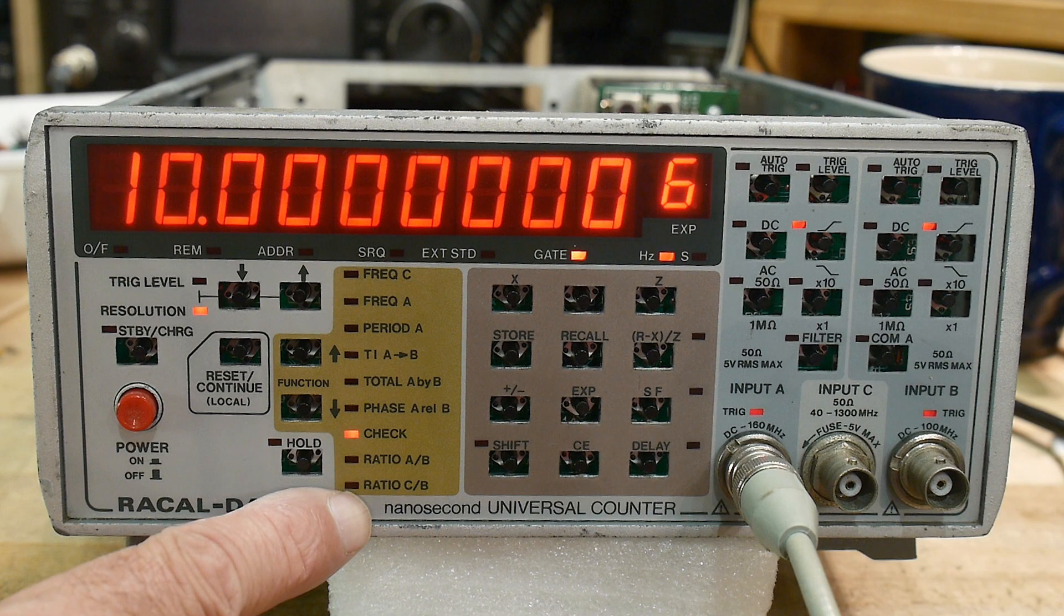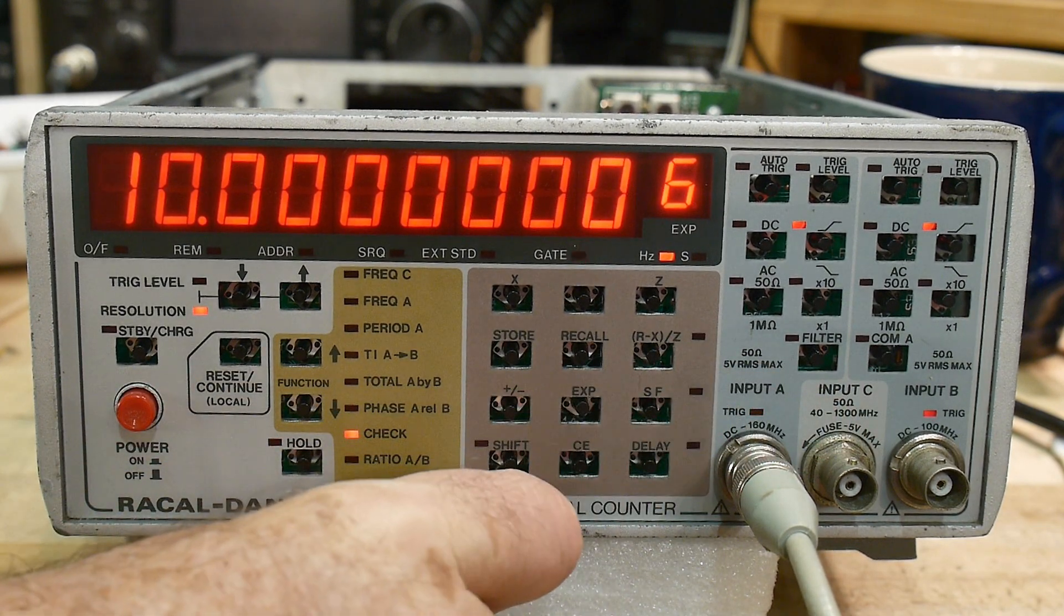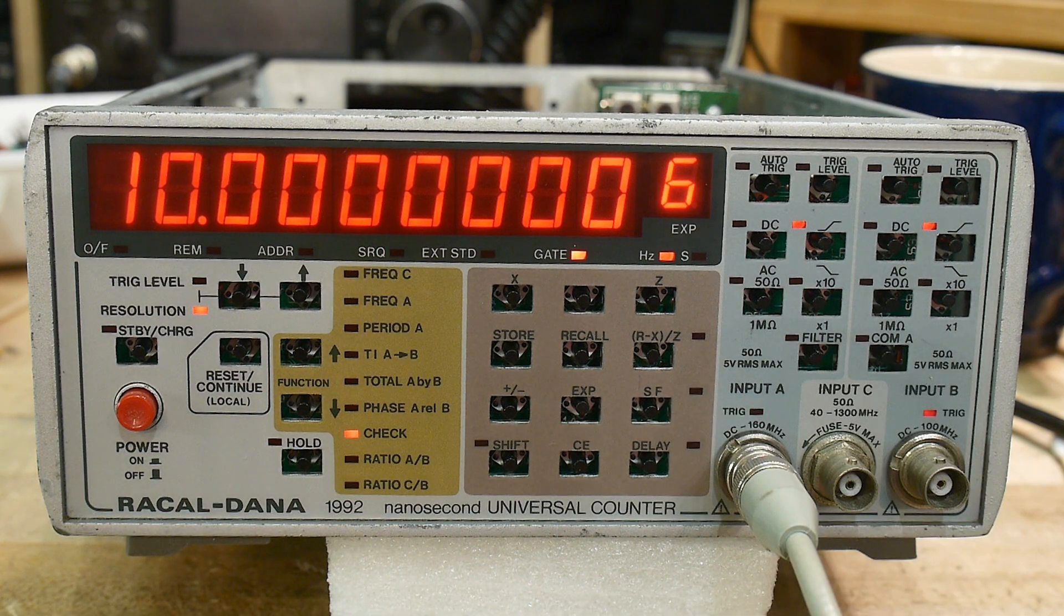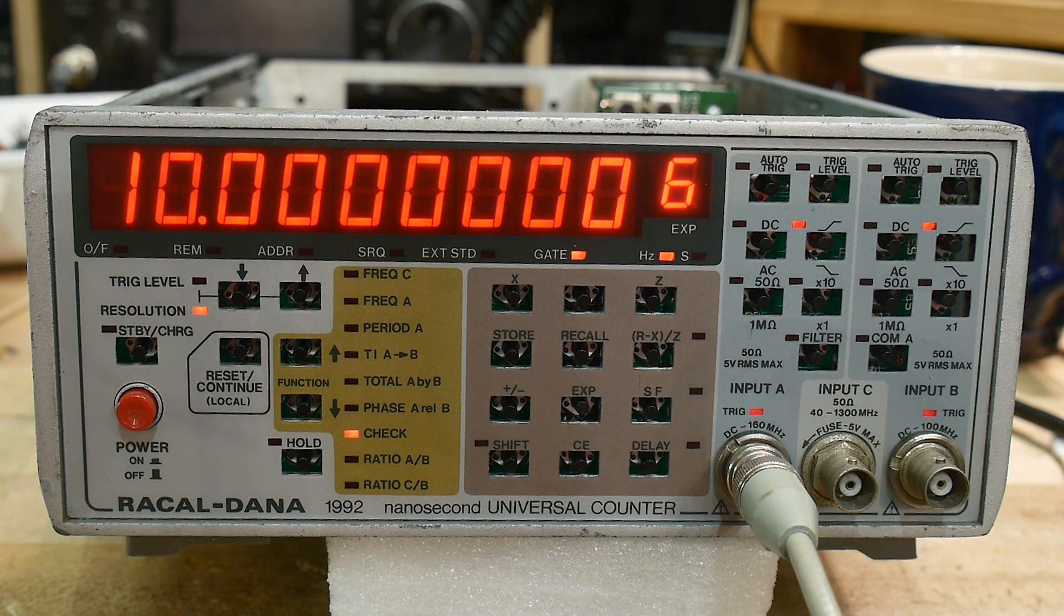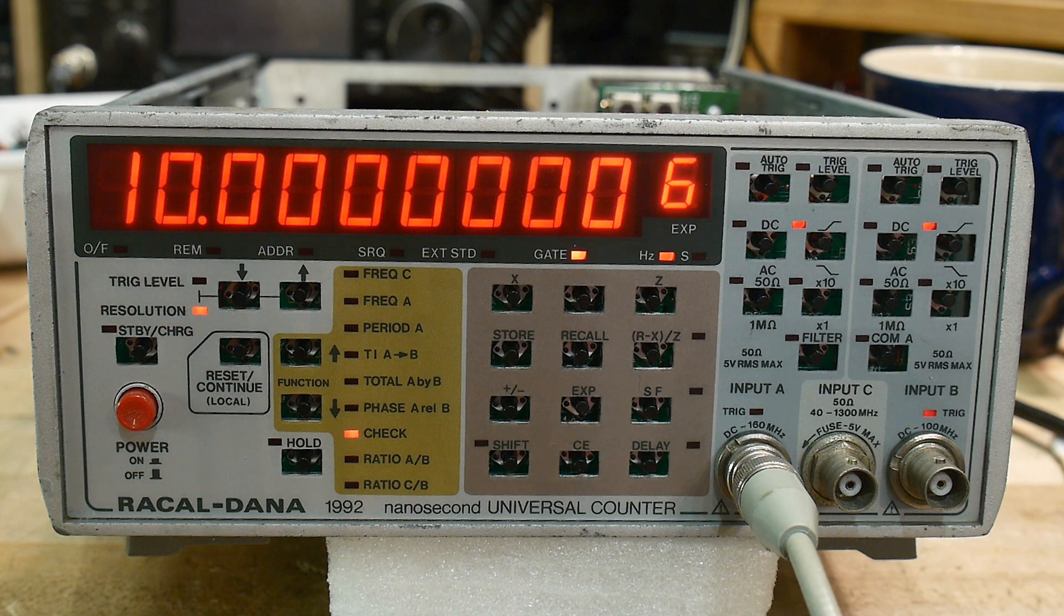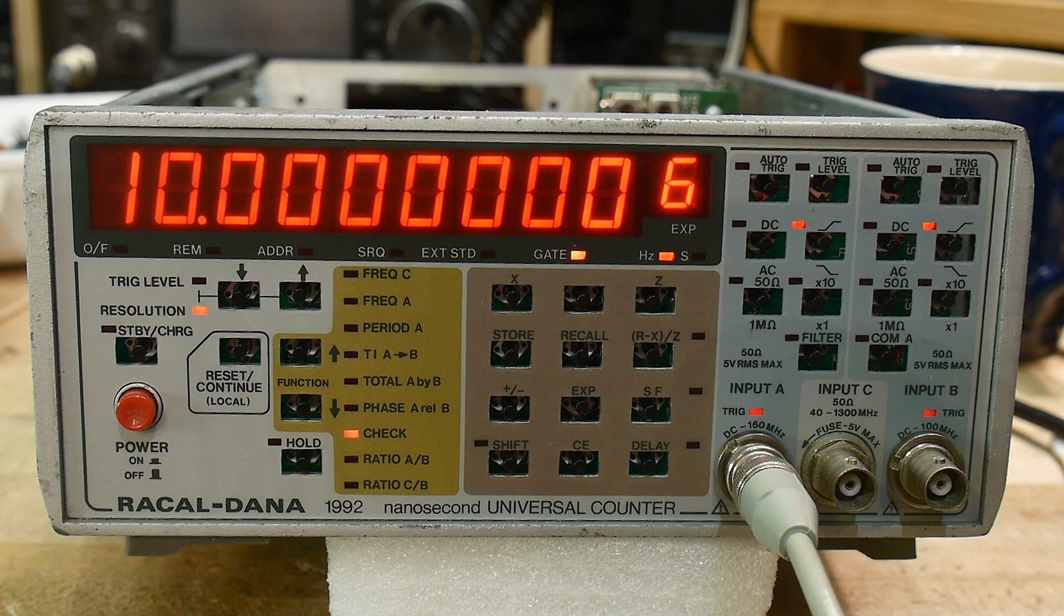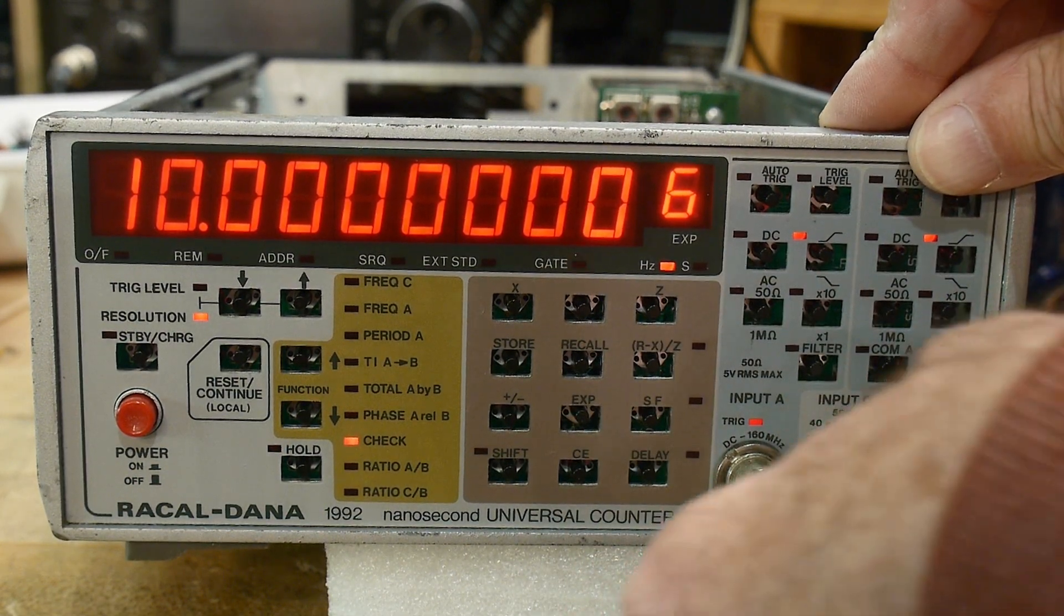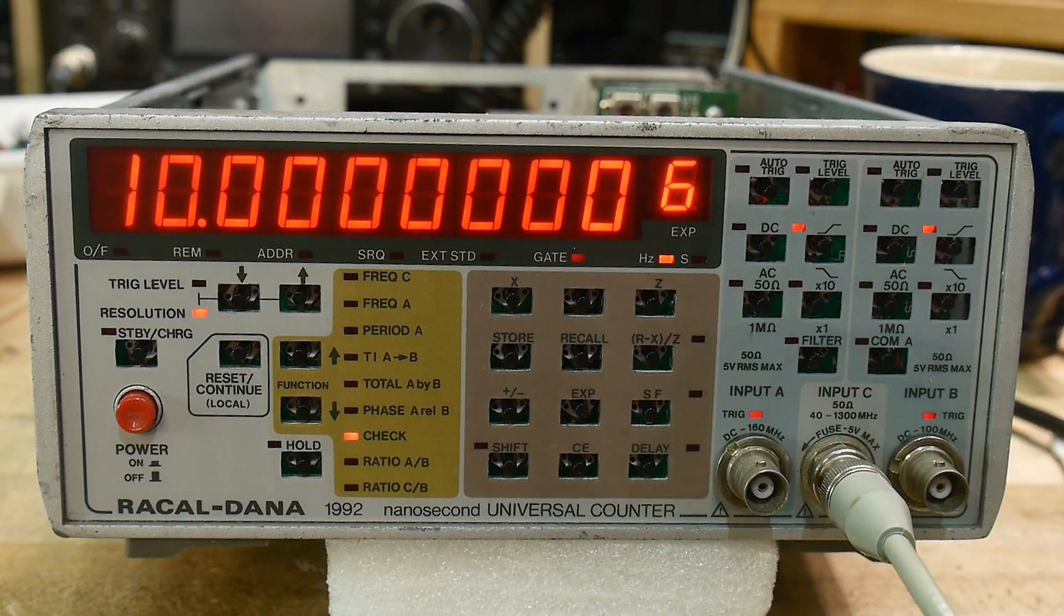Now the C input here starts at 40 megahertz. Let's see if we can't get some higher value here, and it should go up to 1.3 gigahertz. So let's try that out. We're running over some packing bubbles. All right, my generator's warming up. Let's move the BNC to the C channel. C channel's to go from 40 megahertz to 1300 megahertz. So let's give that a try.